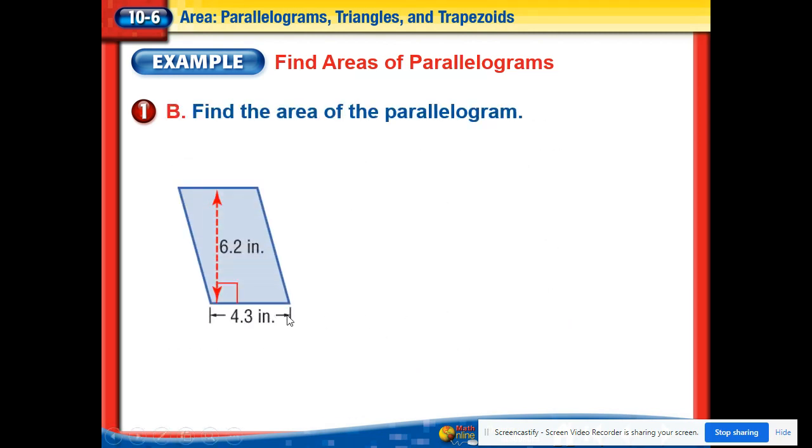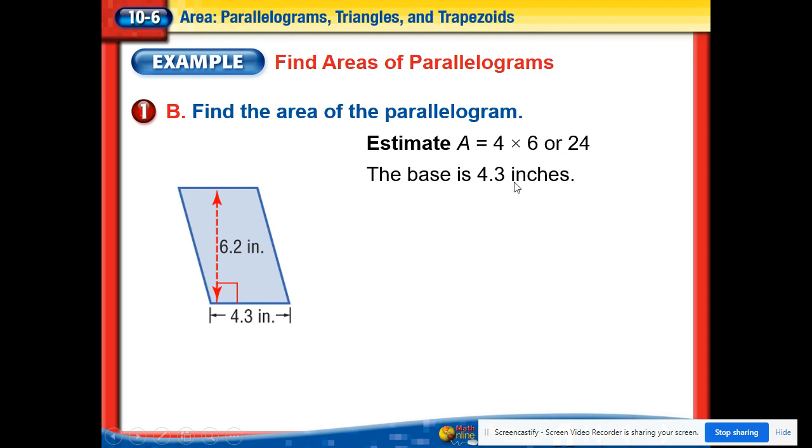Moving on to another, we can even have decimals or fractions. 4.3 across the base, and then this distance between the two bases is 6.2, called the height. If we want to estimate it, we should get a value around 24. 4 times 6 is 24. Just to make sure that we kind of check and make sure we're doing it right. So the base is actually 4.3 and the height is 6.2.